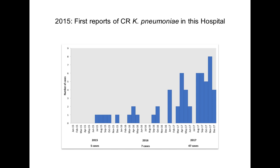Around 2015, our collaborators — clinicians at the teaching hospital next door — started dealing with a very worrying outbreak of carbapenem-resistant Klebsiella pneumoniae. By definition, this means they're resistant to most last-line therapies, are very hard to treat, and lead to casualty rates of 30 to 50% of all cases. We see an increase of cases until a peak around 2017, with the outbreak continuing into 2018 and 2019, reporting about 80 cases in the last two years — very hard to contain.